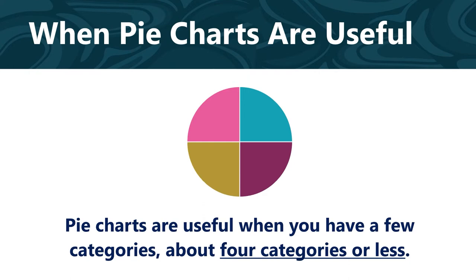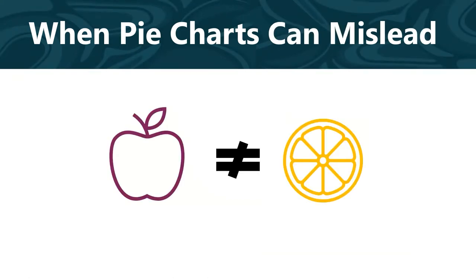Pie charts can be useful when you only have a few categories, about four or less. The pie chart on the last slide had only four categories: children, young adults, adults, and seniors. Any more than that, and things can start to get confusing because it can be difficult to compare the sizes of different slices. Just like it can be difficult to compare apples to oranges, it can be difficult or inappropriate to compare data from different pie charts.